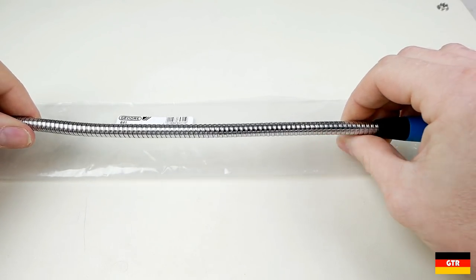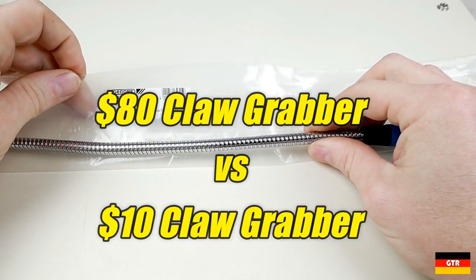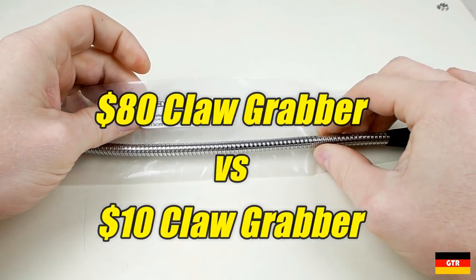Welcome everyone. So today I think we're going to take a look at this Gedore 641, what they call the claw gripper.